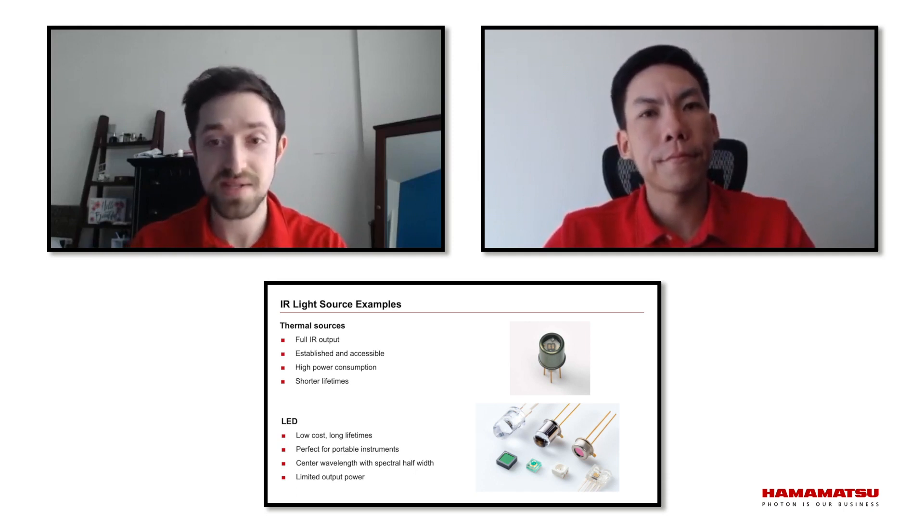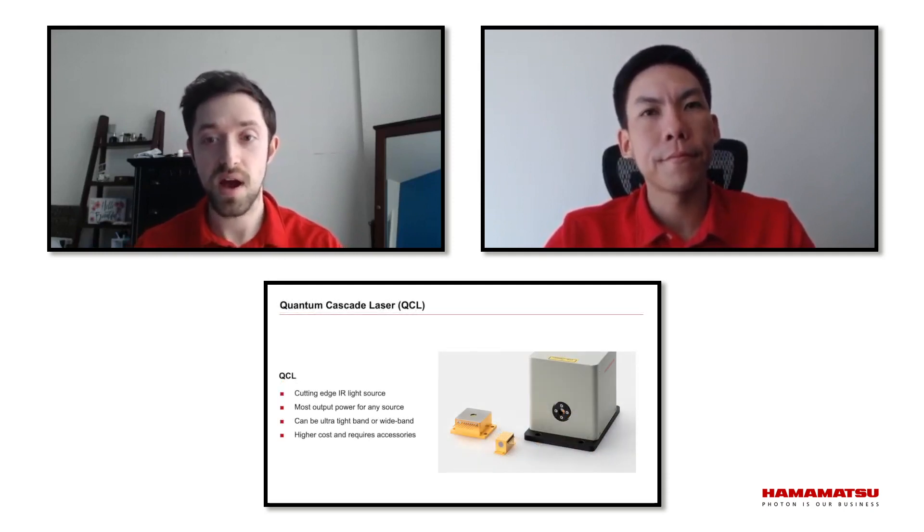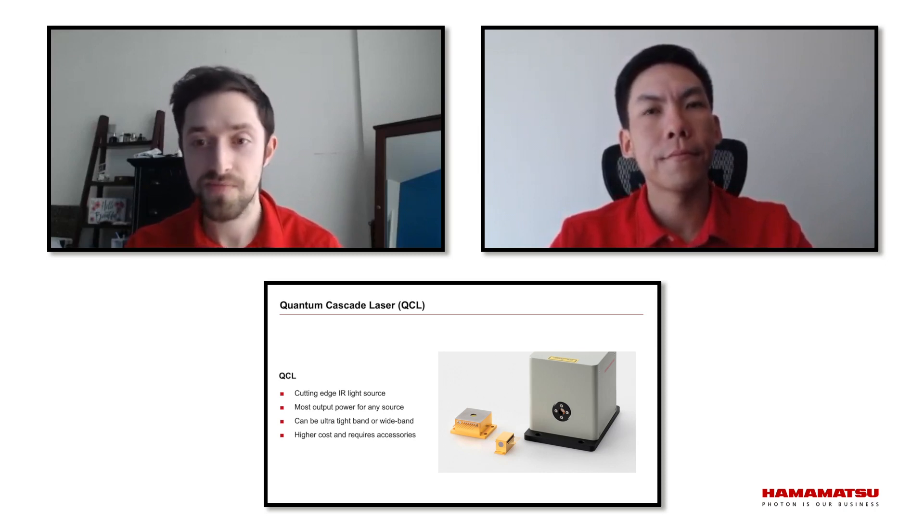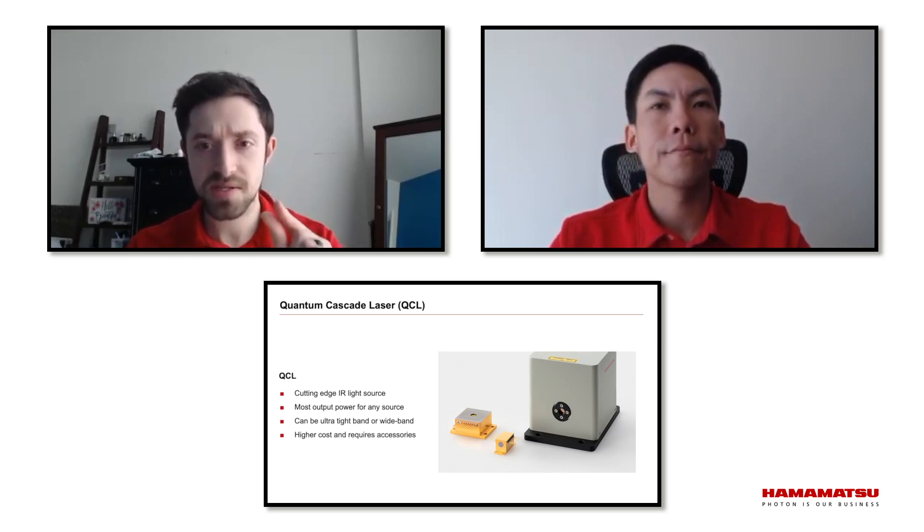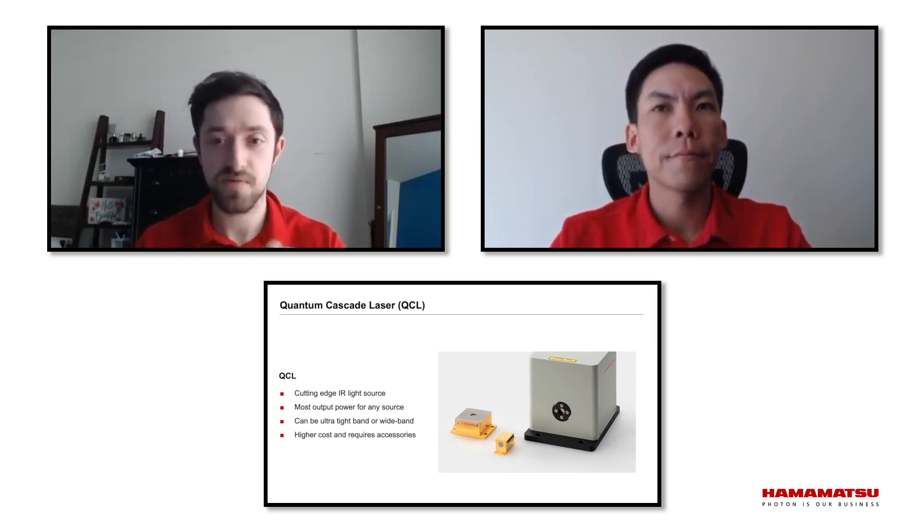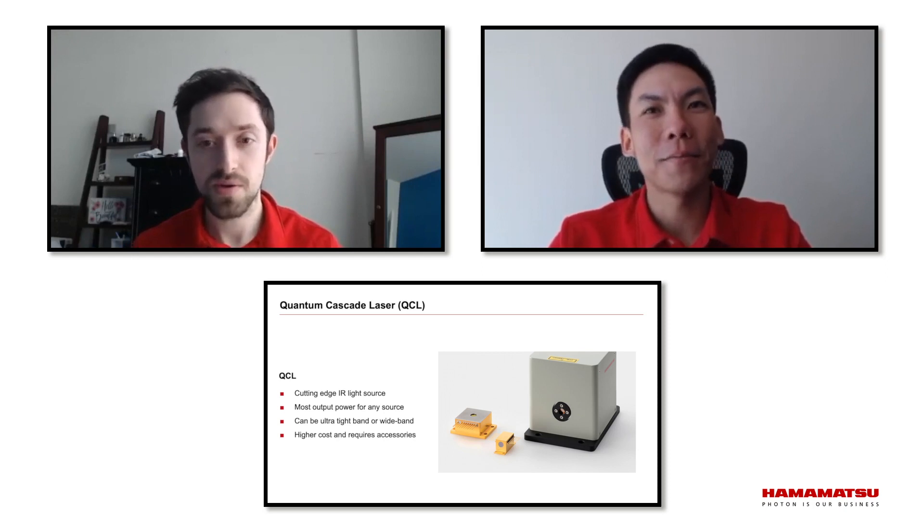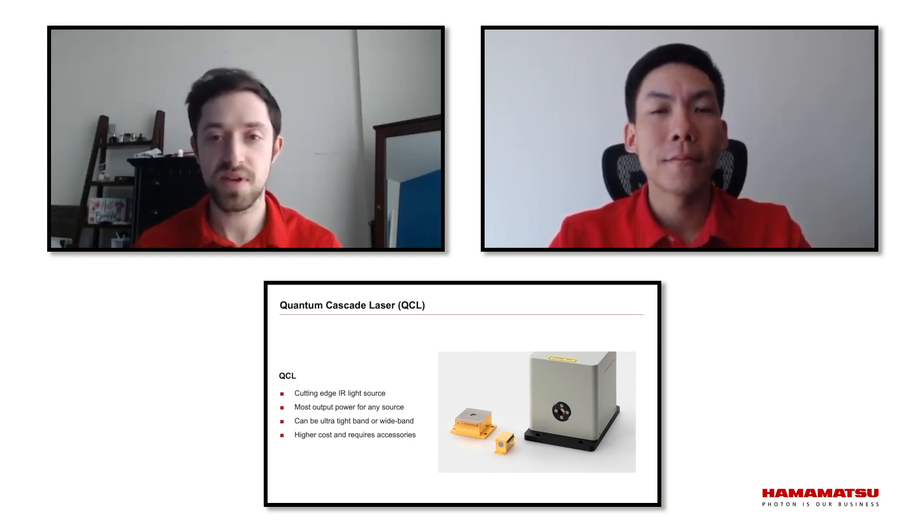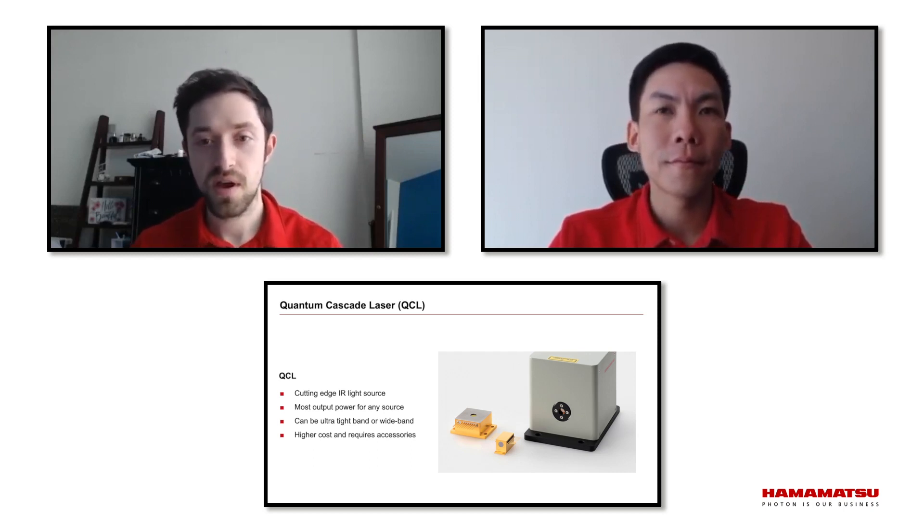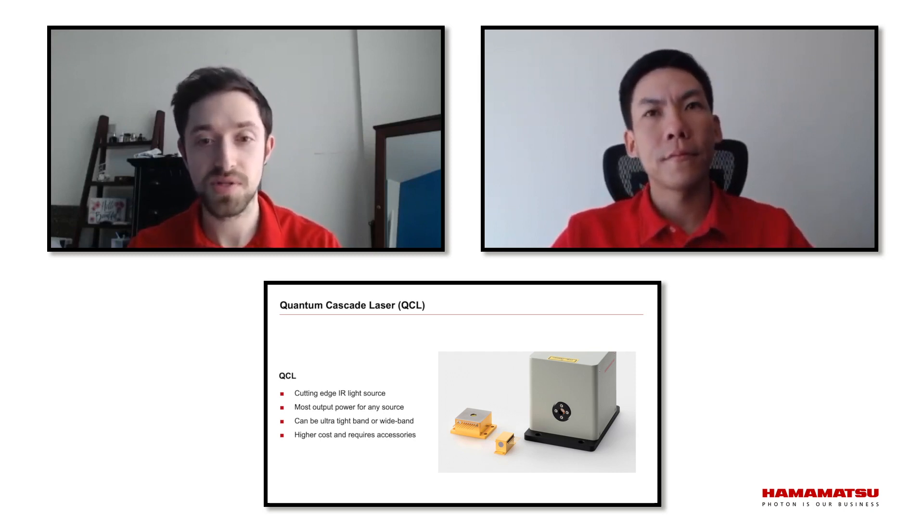Then there's the quantum cascade laser. This is the highest echelon of infrared light sources. It will provide the most output, can provide very specific bands, which is great for gas analysis or very wide band with high output. Everyone wants more output. Quantum cascade lasers are a very high performance component, usually pretty expensive. Again, I'll be expanding upon this later. So, when we take the example of light source, something in the middle, and detector, a classic example is moisture monitoring, something you run into a lot, right, Albert?